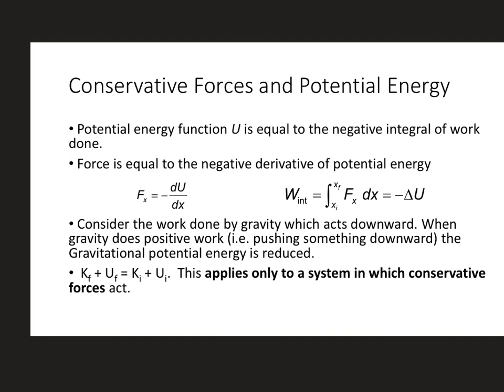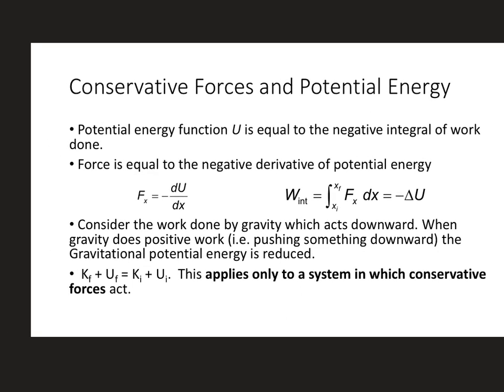The potential energy function is equal to the negative integral of work done. If we rearrange this equation, we get dU equals minus integral F dx. And force is equal to the negative derivative of potential energy, which was here before. So if you consider the work done by gravity, it acts downward. When gravity does positive work, it's pushing downward, gravitational potential energy is reduced. So that's how you get delta U equals minus F dx.